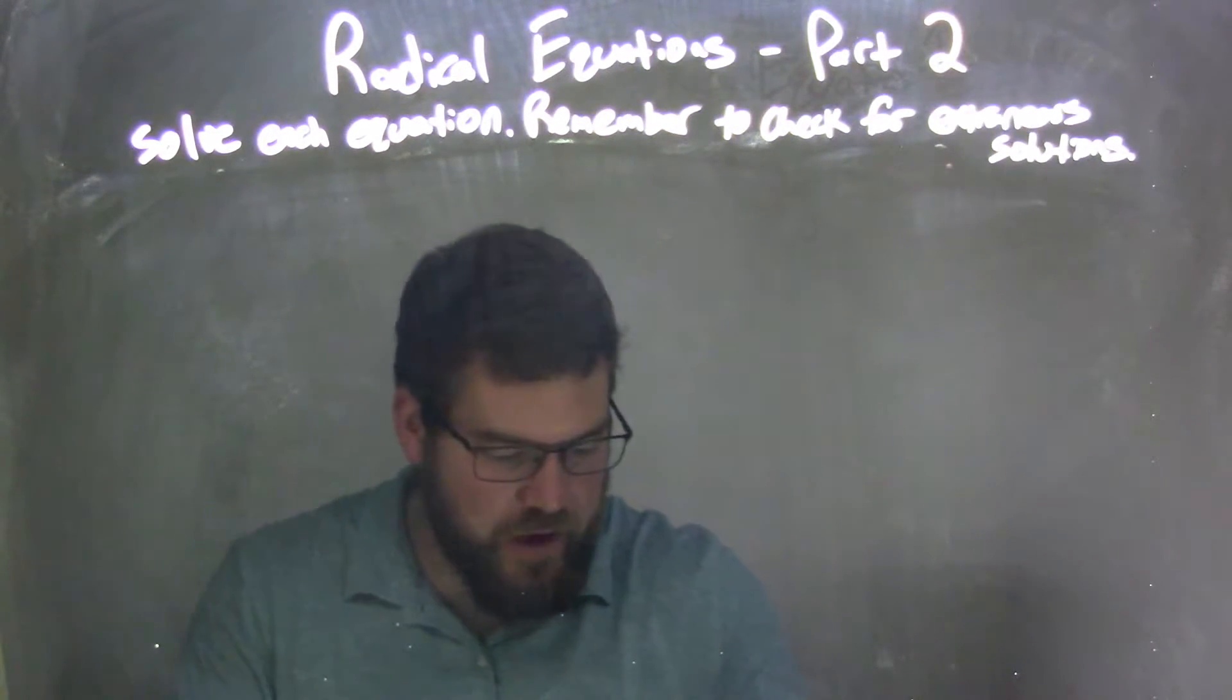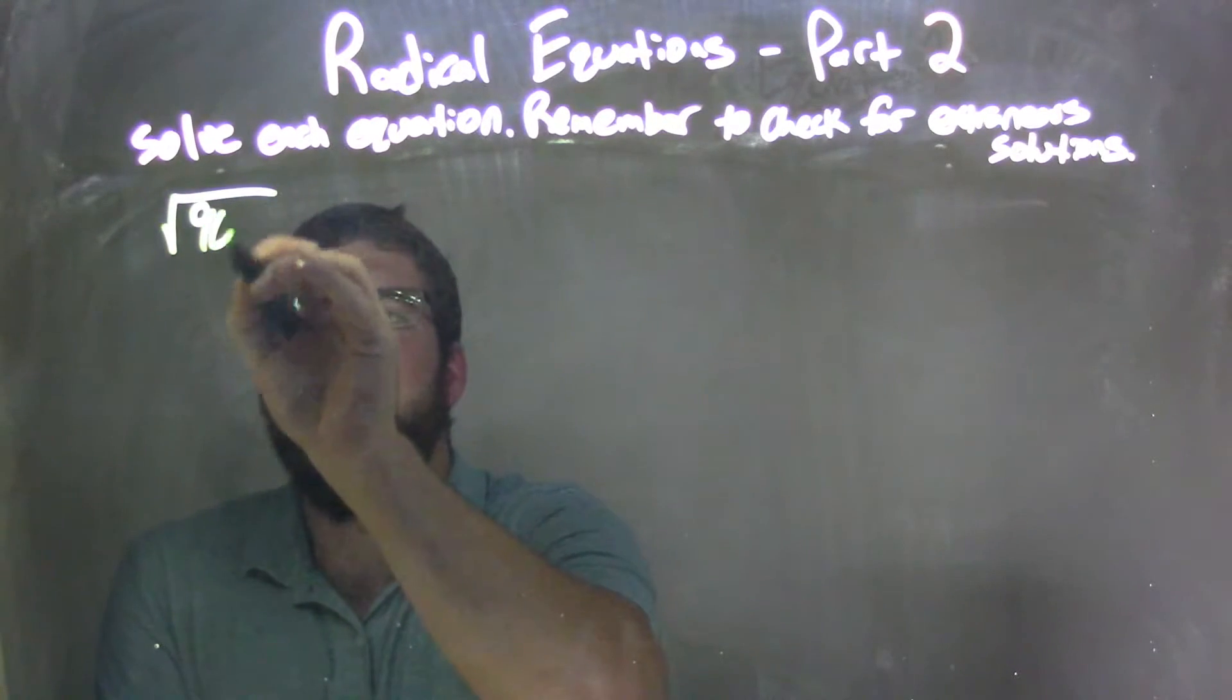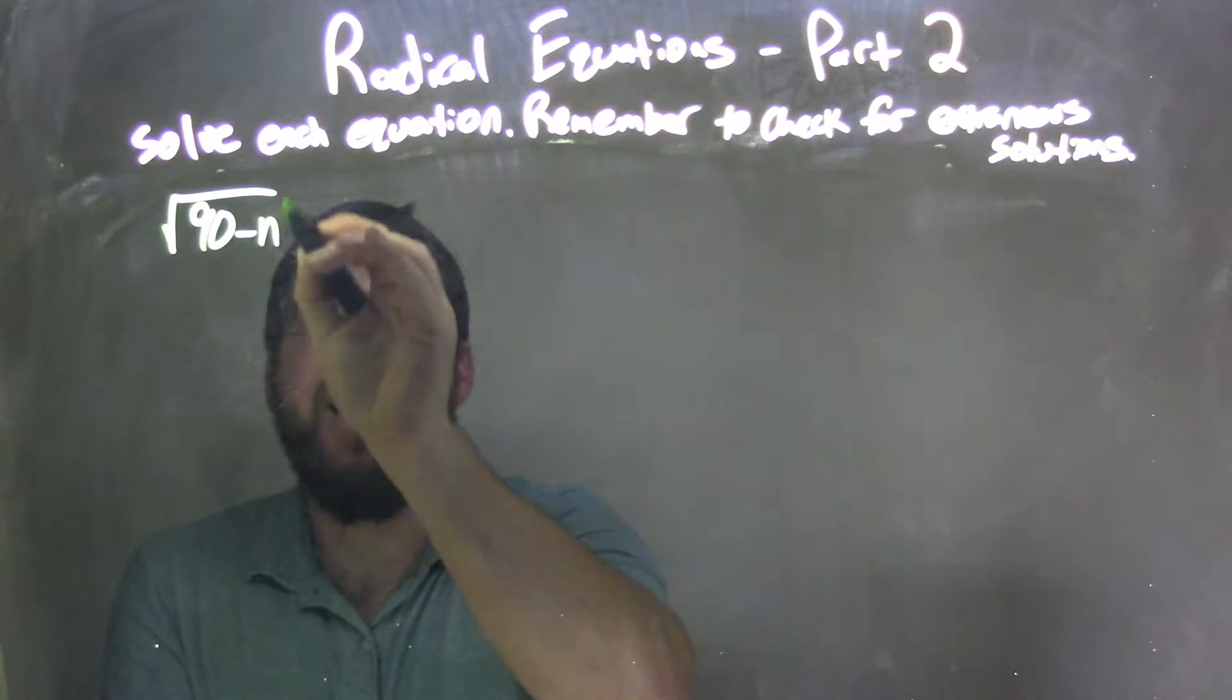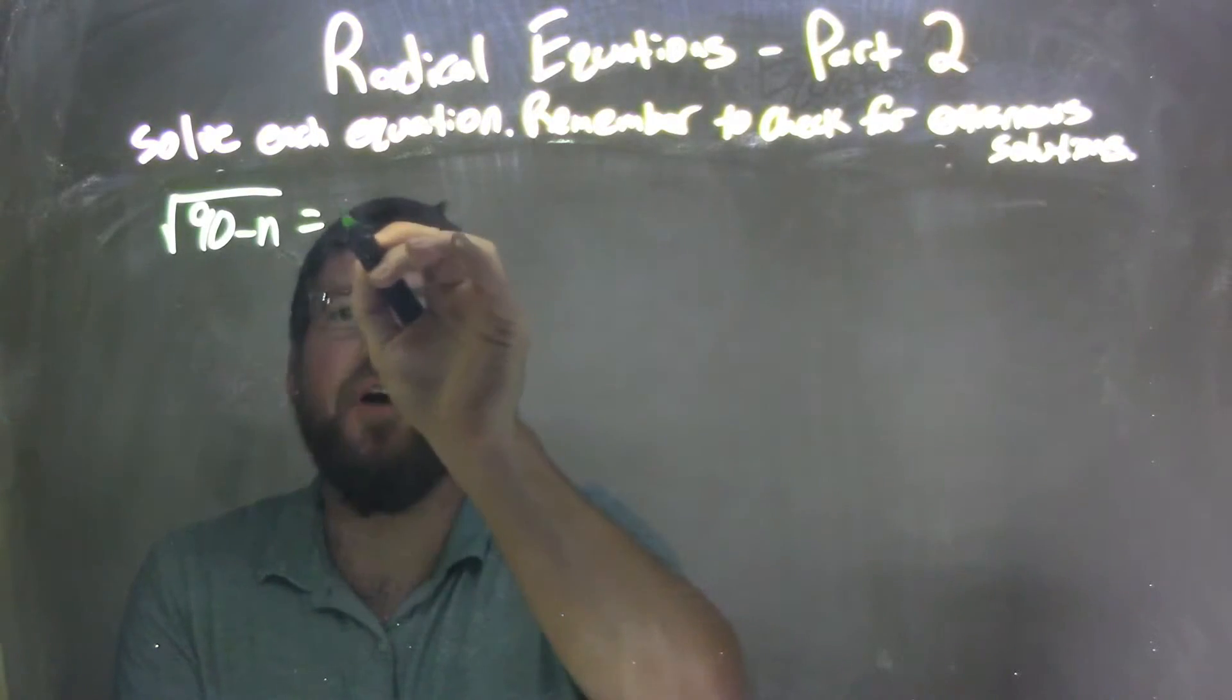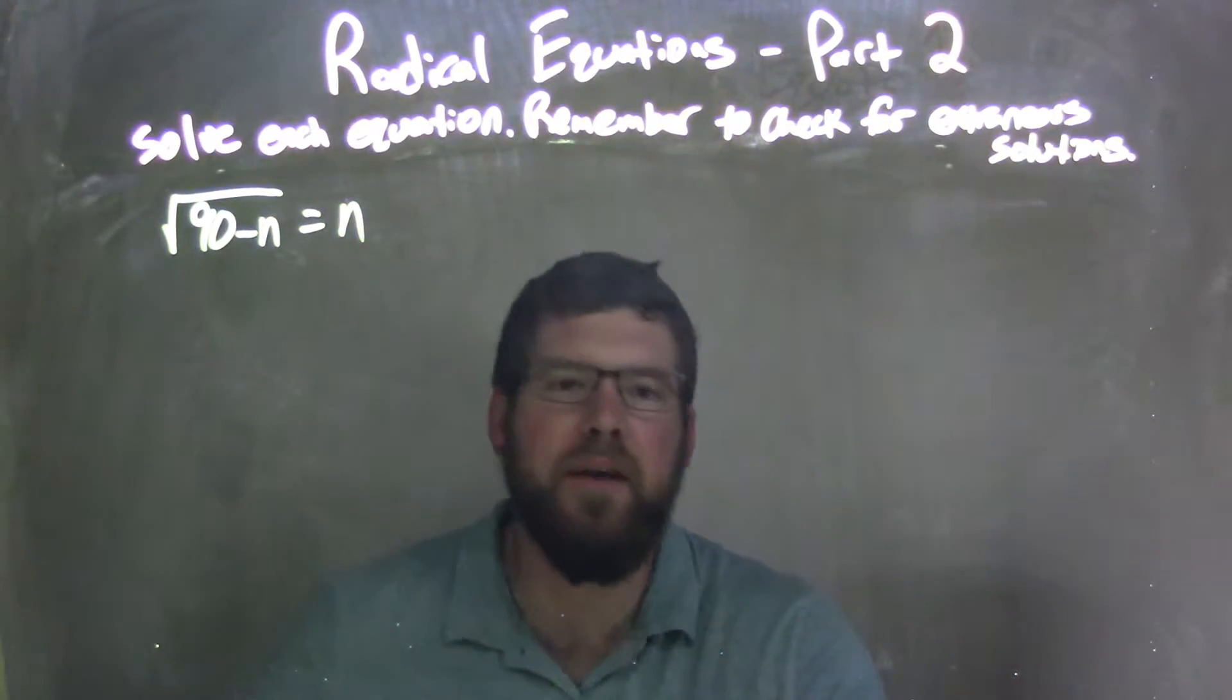So if I was given this equation, square root of 90 minus n equals just n. Square root of 90 minus n equals n.